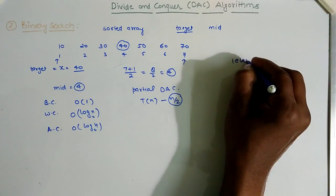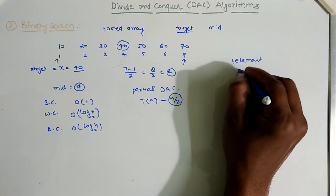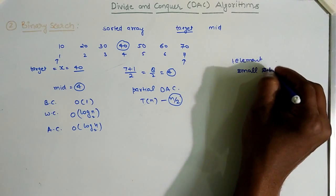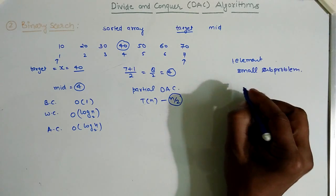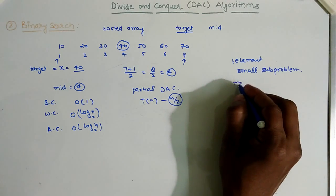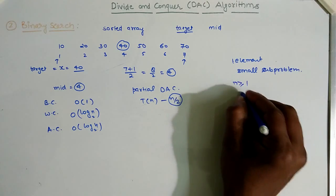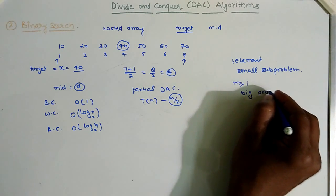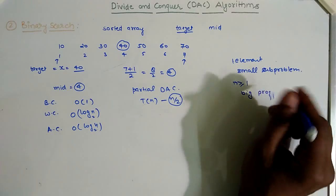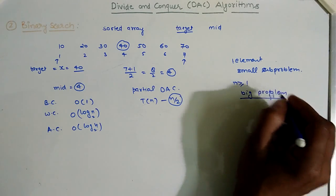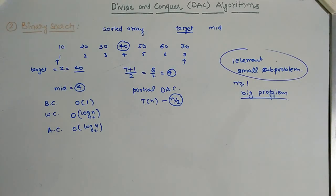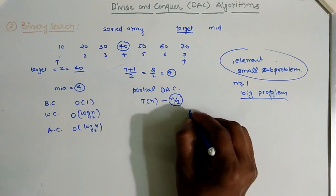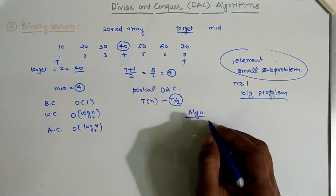In this scenario, a single-element problem is considered a small sub-problem for the algorithm. If n is greater than or equal to 1, then it would be a large problem. The base case is when only one element is left in the array. Now let's write down the algorithm, which is called Binary Search.